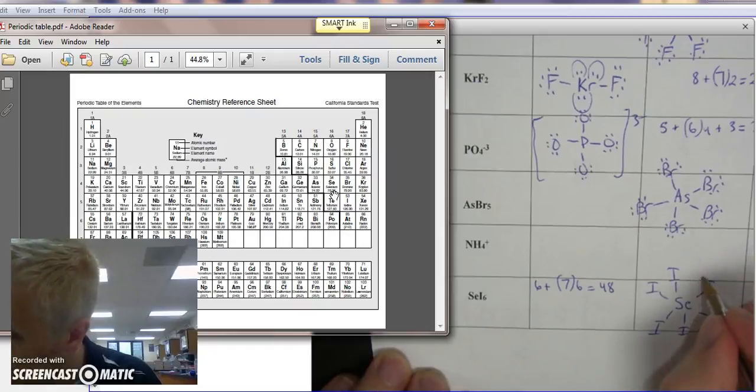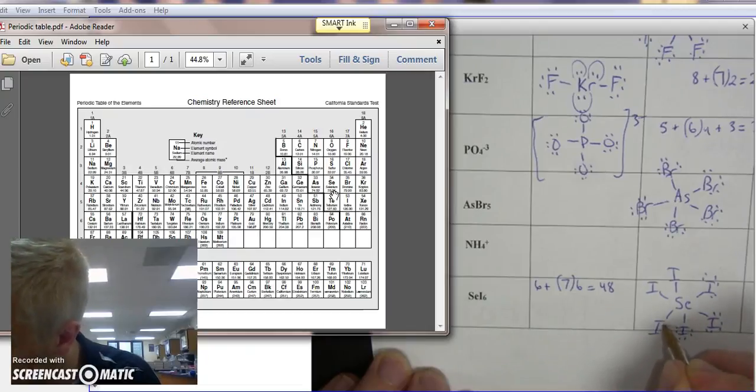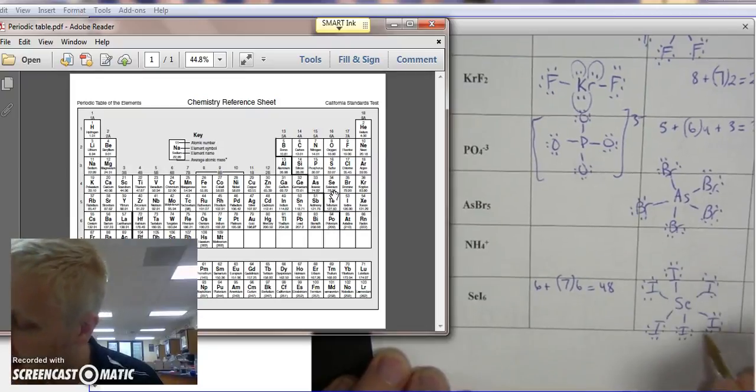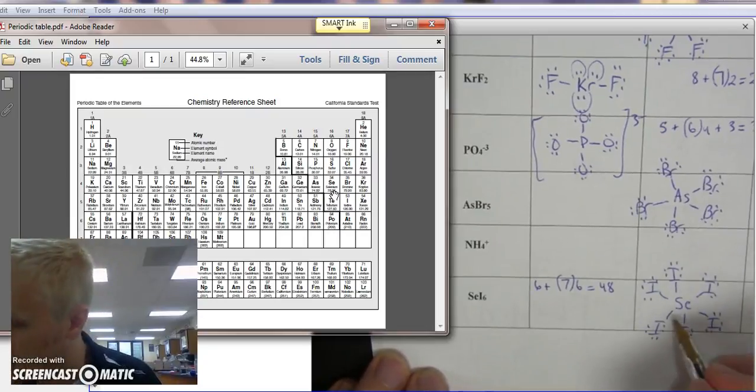[counting from 2 to 48]. Each of these iodines has 8 outer electrons, but selenium has 2, 4, 6, 8, 10, 12.